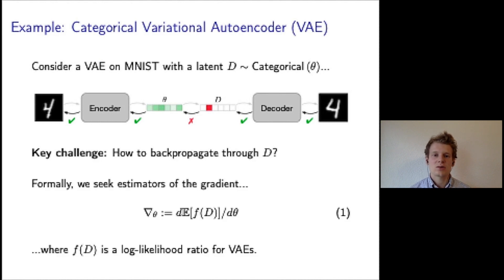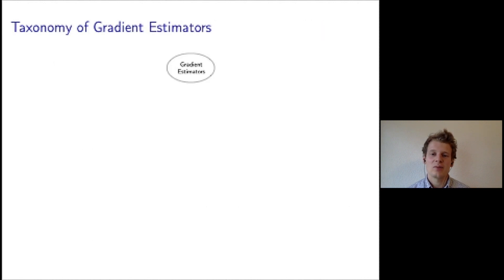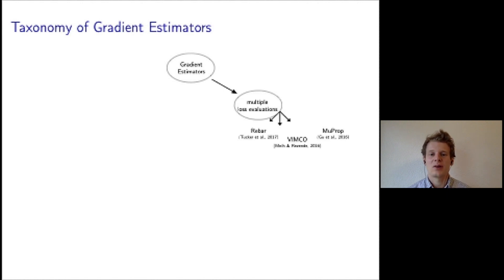The key challenge in training such models using gradient-based techniques is to backpropagate through the latent variable d. Formally, we phrase this problem as seeking estimators of the gradient of our objective with respect to theta. The objective is an expectation over a categorical variable of some continuously differentiable function f. For example, in the case of a VAE, f will be a log-likelihood ratio that additionally depends on the parameters of the decoder. Typically, the expectation will be intractable to evaluate and we need to estimate both the objective and its gradient.